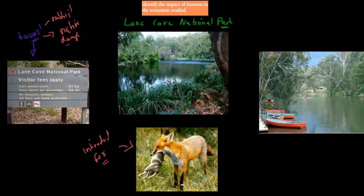Even though Lane Cove National Park is being controlled and they ideally minimise the impact of humans, there's still some impact. Most ecosystems will have some human impact, especially if they're close to human populations. Lane Cove National Park is in the middle of Sydney, so humans have their interventions and their damage or impact on the environment.